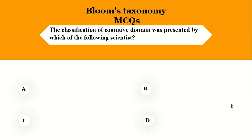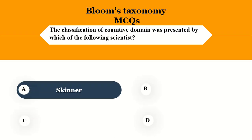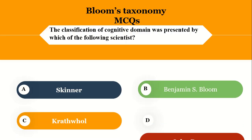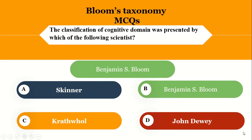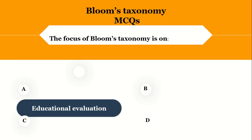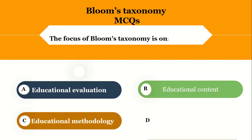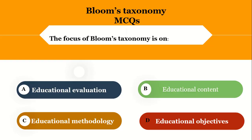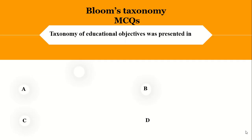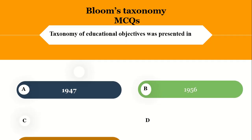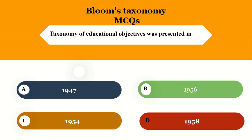The first question is: the classification of the cognitive domain was presented by which of the following scientists? You have four options. The right answer is Benjamin S. Bloom. The focus of Bloom's taxonomy is on educational objectives. Taxonomy of educational objectives was presented in 1956.